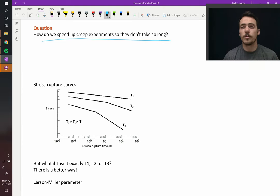What we can do is generate stress rupture curves. Stress rupture curves show the following: you're plotting stress versus the stress rupture lifetime, meaning how long it survived under different conditions. You plot your data at different temperatures: T1, T2, T3.